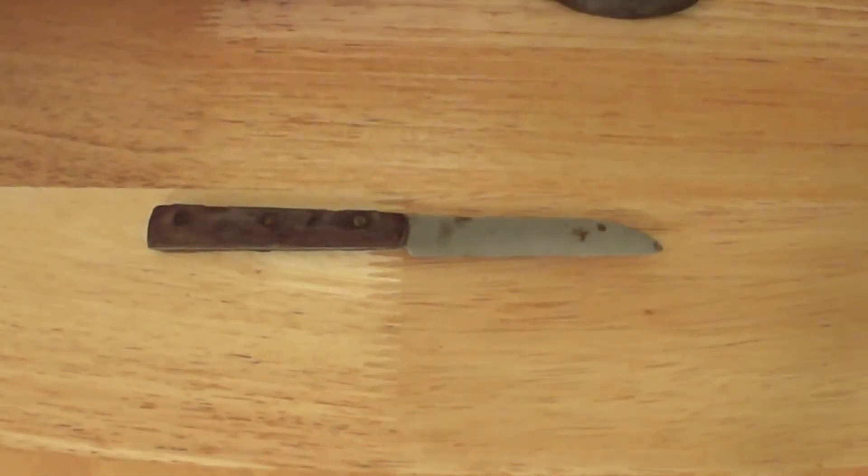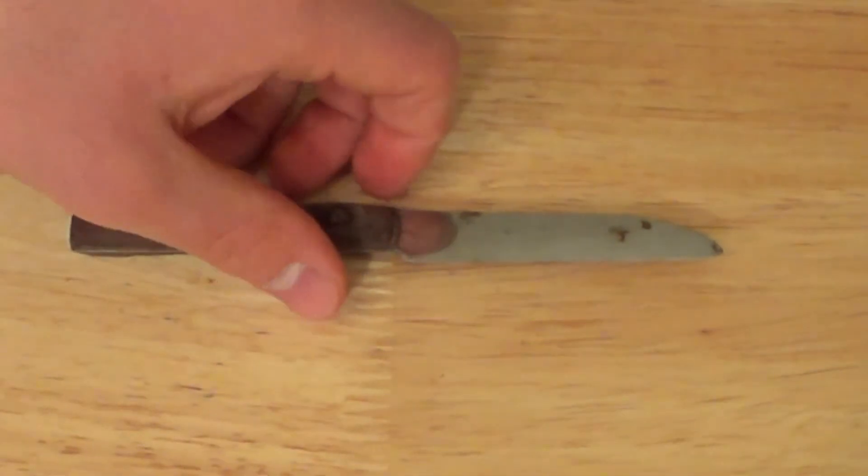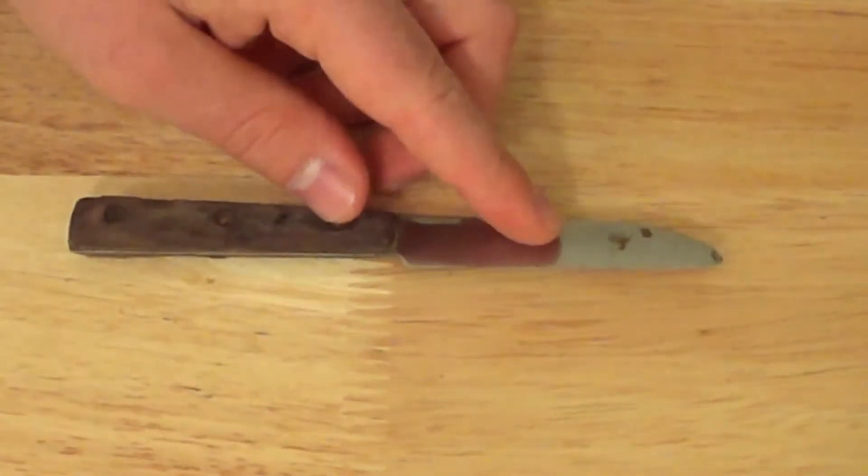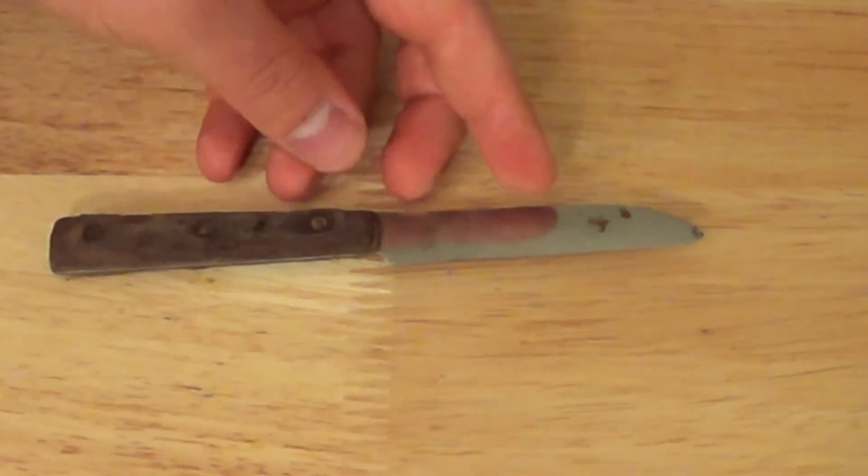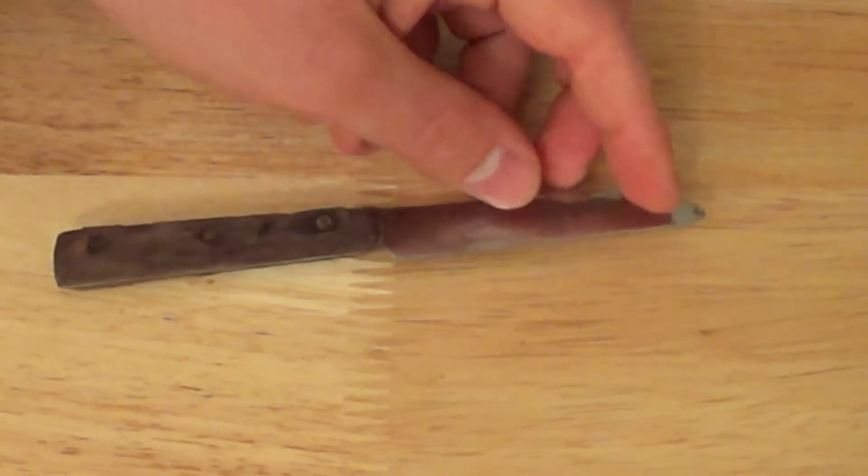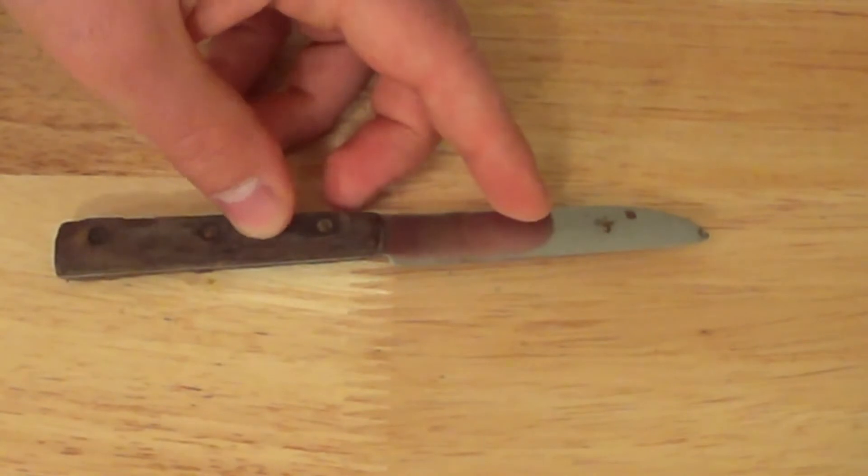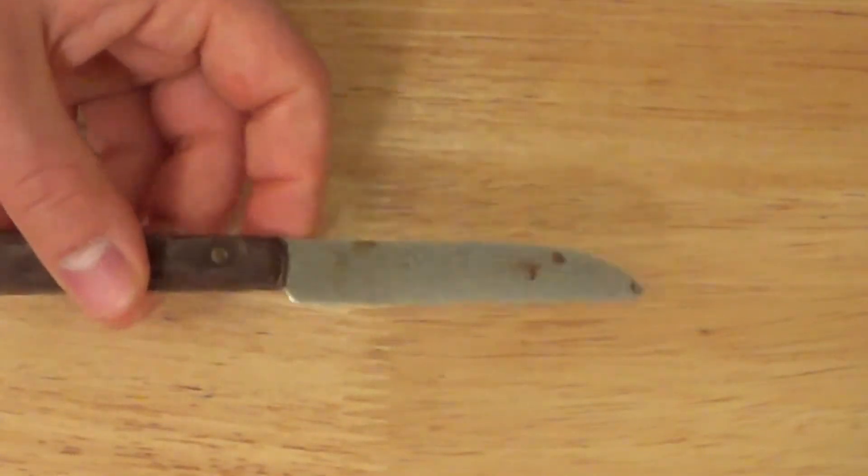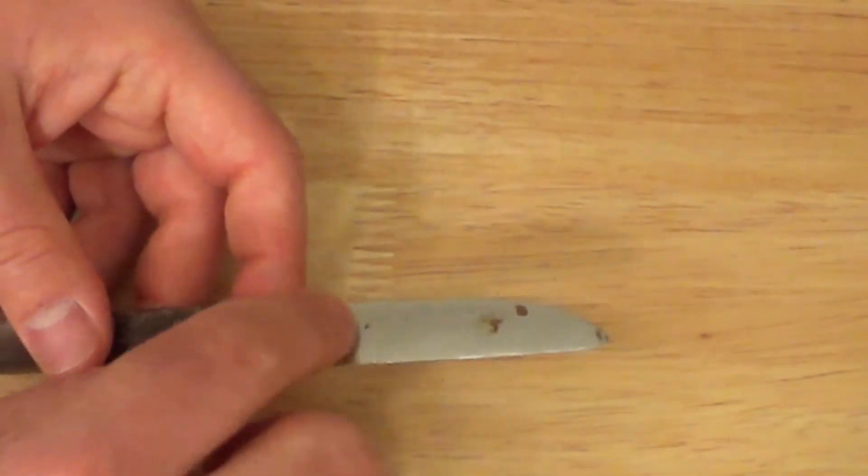If we look at the little paring knife, something I thought was interesting was that when I found it, it was covered in mud but I was able to wipe the mud off with my fingers. The only real damage to this knife was this little bit of discoloration here.